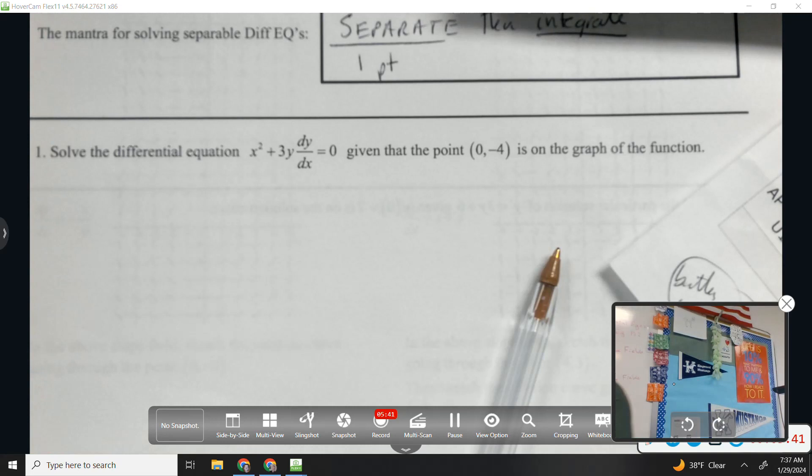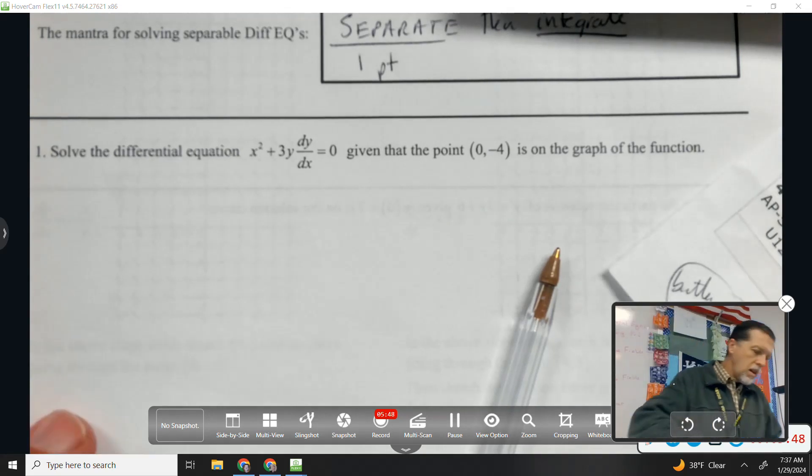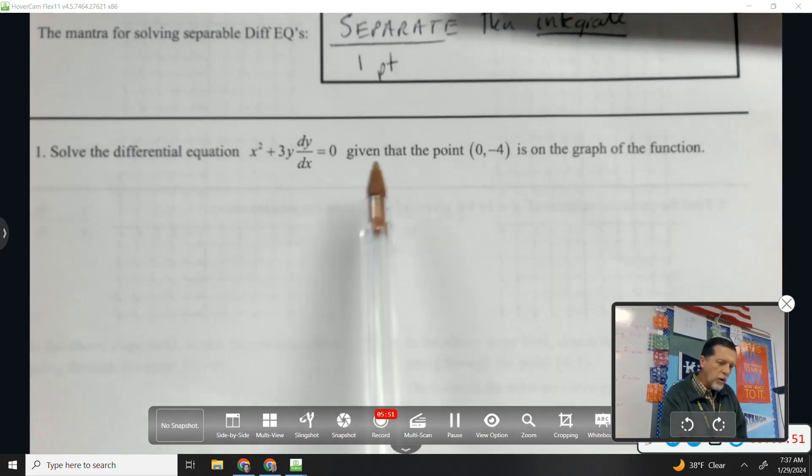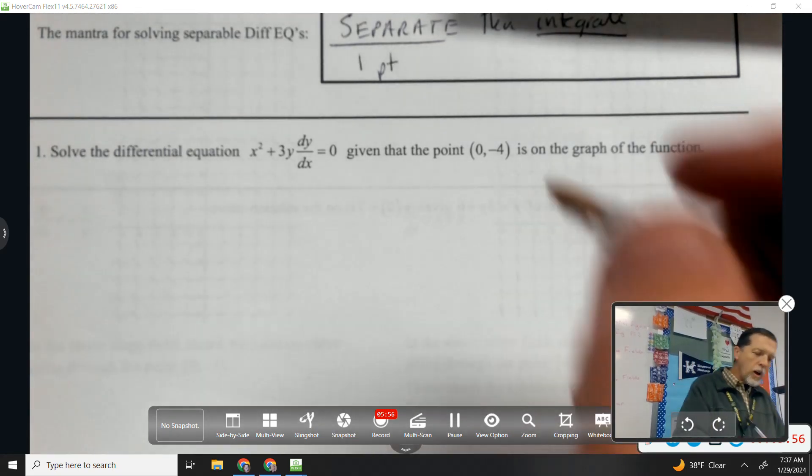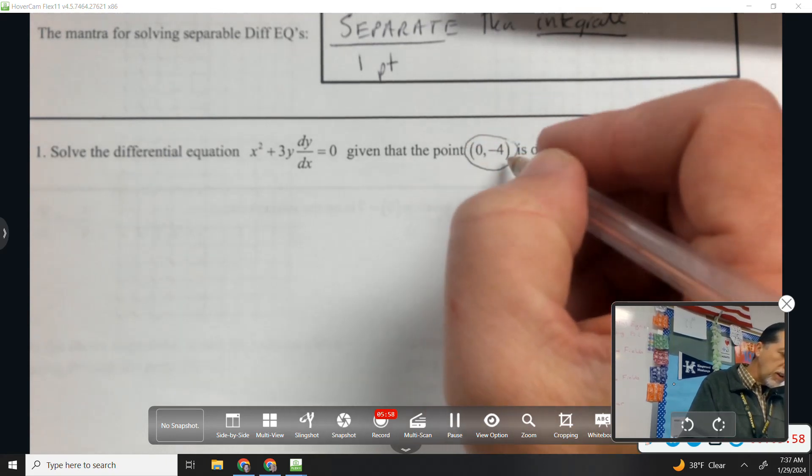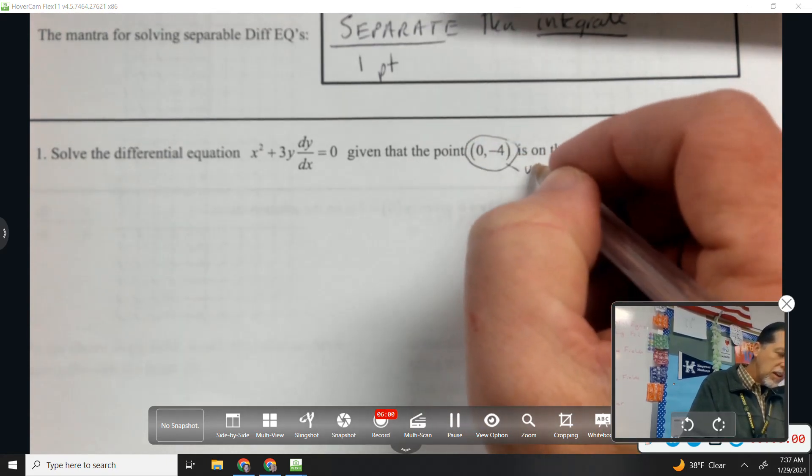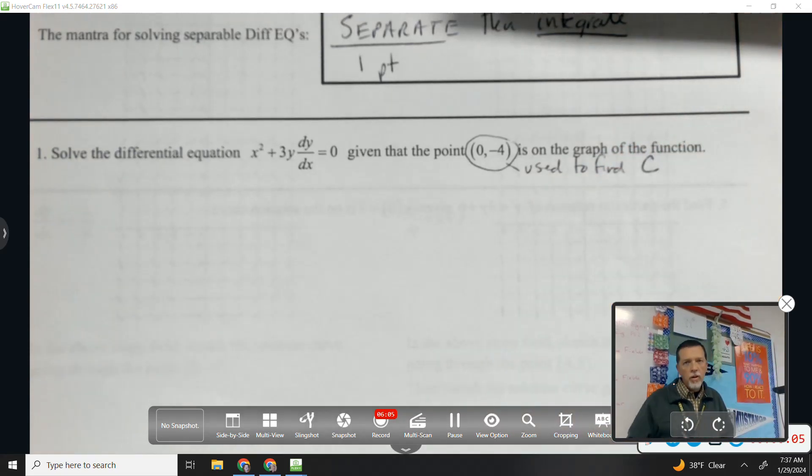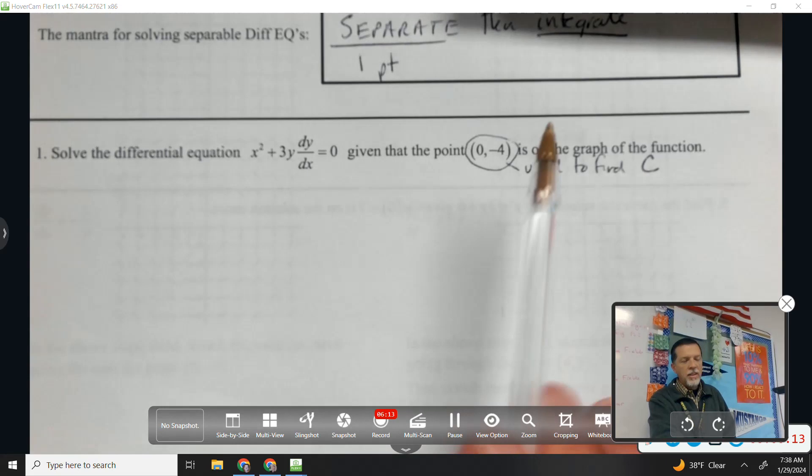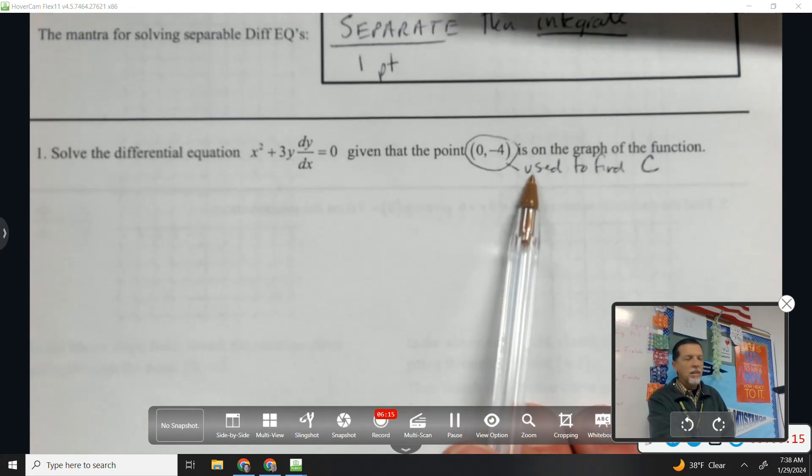Let's do an example here. Solve that differential equation given this point is on the graph of the function. So even before I start, I know this point is going to help me find C. So kind of working from the backwards, I'll need to separate, I'll need to integrate, when I integrate I get a plus C, and then this point will come in and I can use that to figure out what C is.